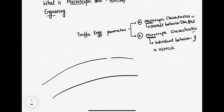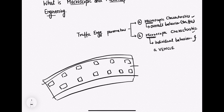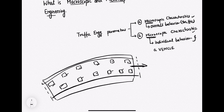Suppose you have a road and in that road a huge number of vehicles are moving. When you study the overall behavior of these vehicles — what is the speed with which the traffic is moving, what is the number of vehicles in that road section — then it comes under macroscopic characteristics.